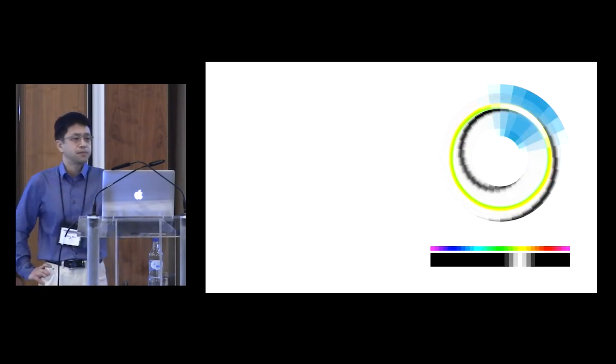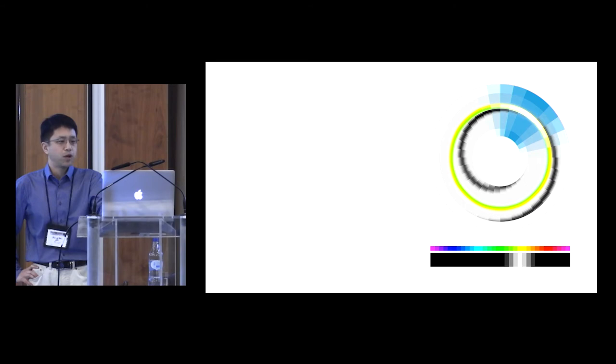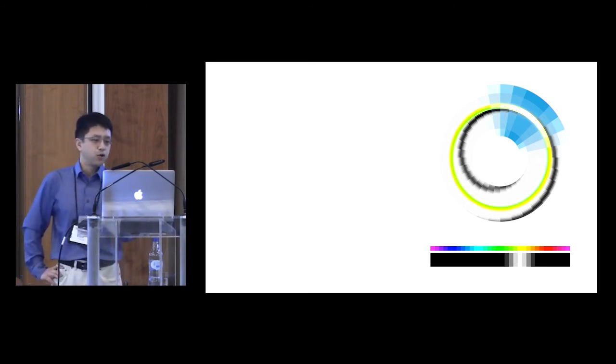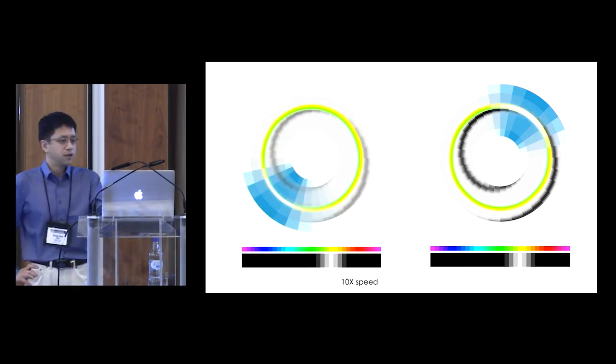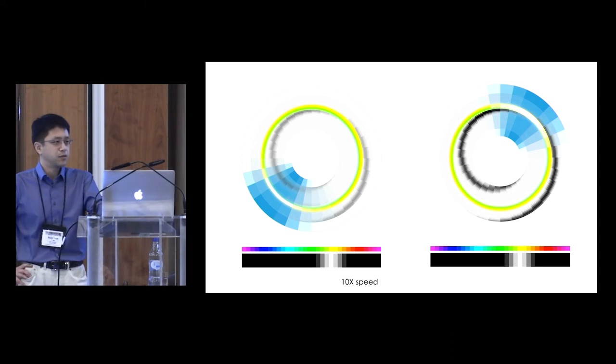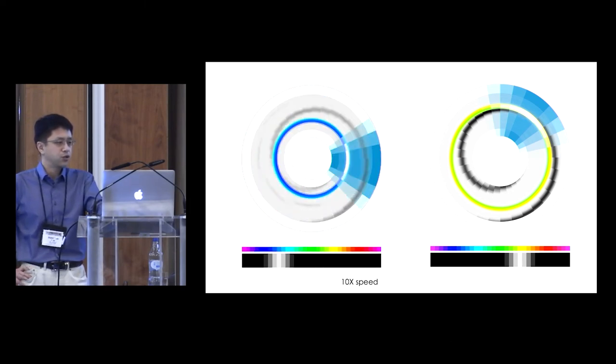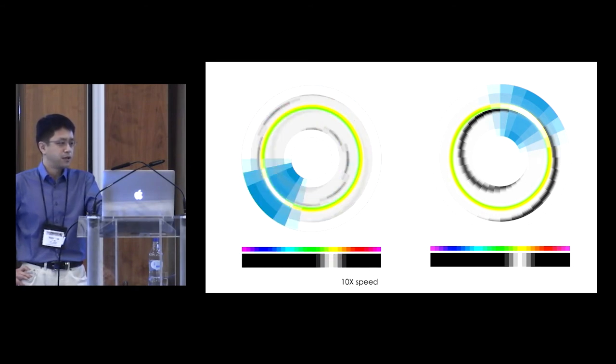This model can obviously explain the flexible mapping we observed in optogenetic experiments. When a stimulus is at yellow position, the bump should be at the northeast because that's the weakest point for synaptic inhibition. But here, we optogenetically shifted the position of the bump to the other side of the ellipsoid body. Therefore, the synaptic weight of that part should be depressed. And over time, a new offset develops.